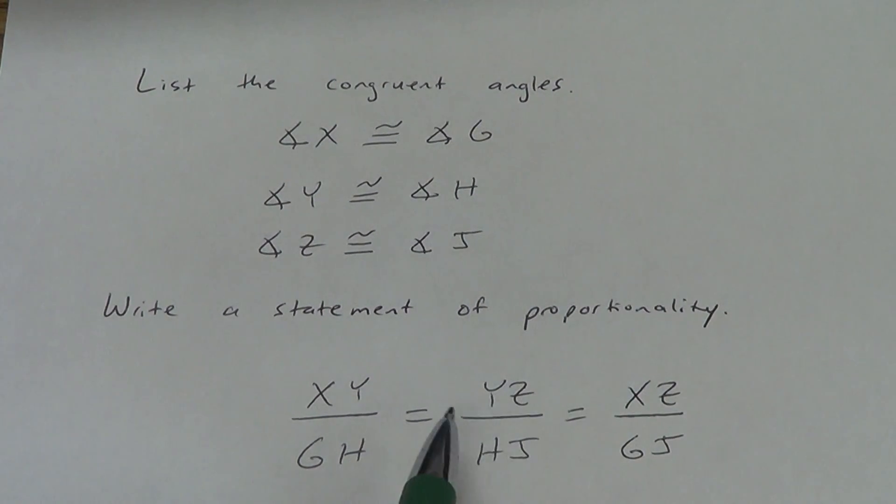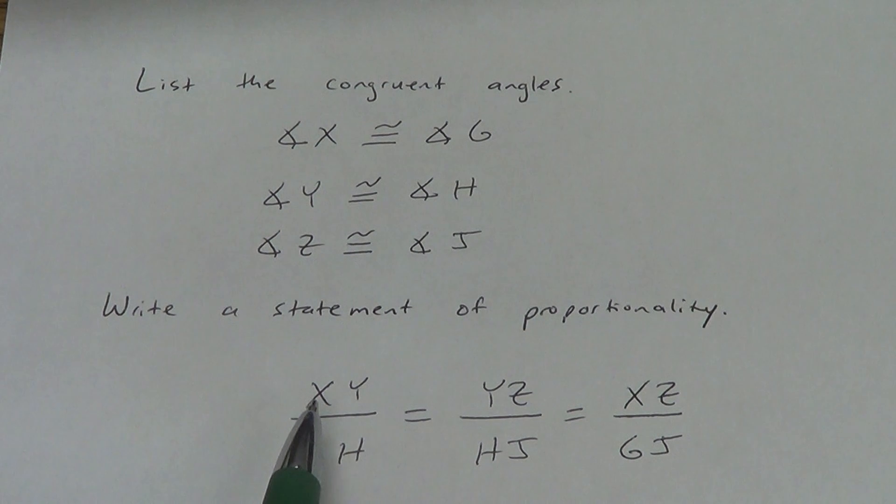You could do a couple things. What if I wanted to put XZ before YZ? That's fine. As long as XZ is over GJ. You've got to keep these sides matched up correctly. What if I wanted to put the G and the H and the J and I want to put all that on the top? And all the XYZ stuff on the bottom. That's fine. Not a big deal. As long as you're consistent. You can't put XY on the top here and then put YZ on the bottom here. That will be a mistake. So, keep one triangle always on the top. One triangle always on the bottom. And then just make sure you're matching the sides up correctly as you go. And that's how you write a statement of proportionality. And that's it for Lesson 6.1.